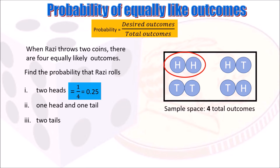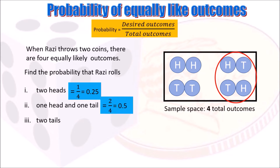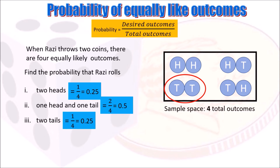The probability that Razzy will get one head and one tail: looking at our outcomes, there are two possibilities — first coin head and second coin tail, or first coin tail and second coin head. That is 2 out of 4, or one half, or 0.5. The probability of two tails: there is only one outcome giving two tails, so that is 1 out of 4, or 0.25. Check your work to make sure it is correct.